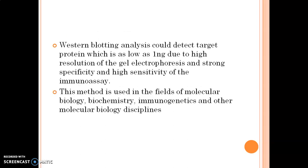Western blotting can detect a target protein as low as even 1 ng due to the high resolution of gel electrophoresis and the strong specificity and high sensitivity of immunoblotting.